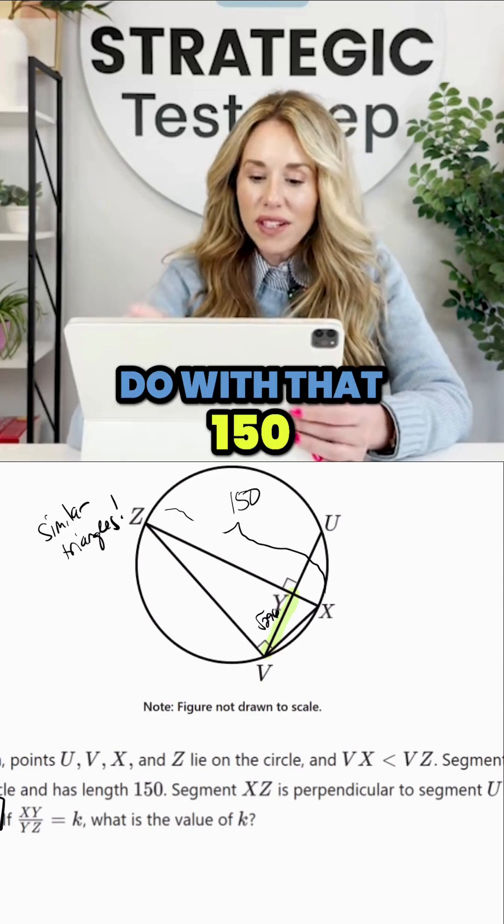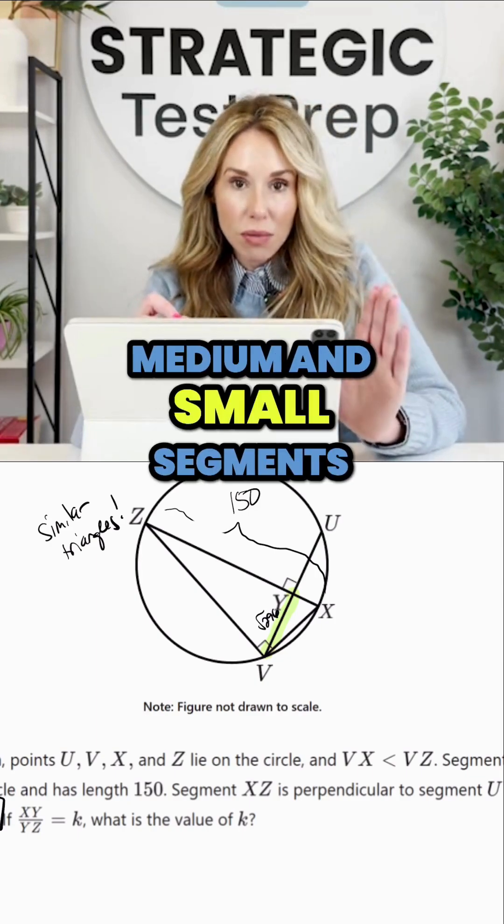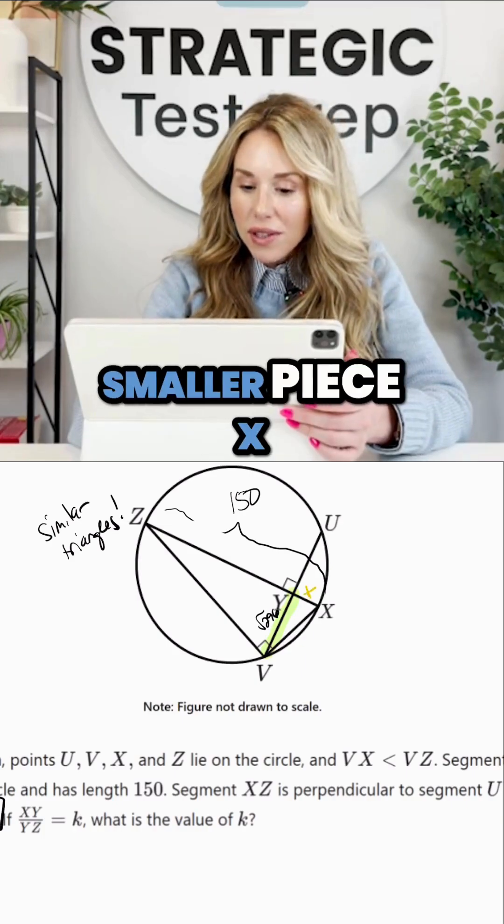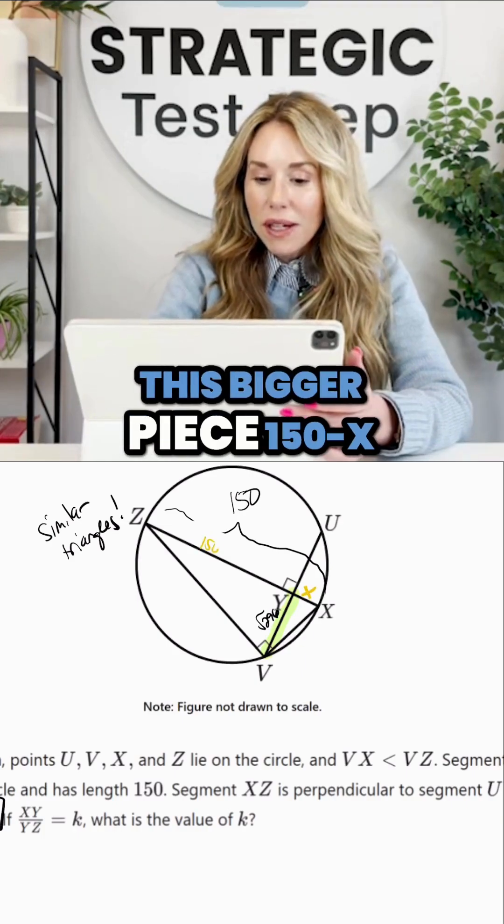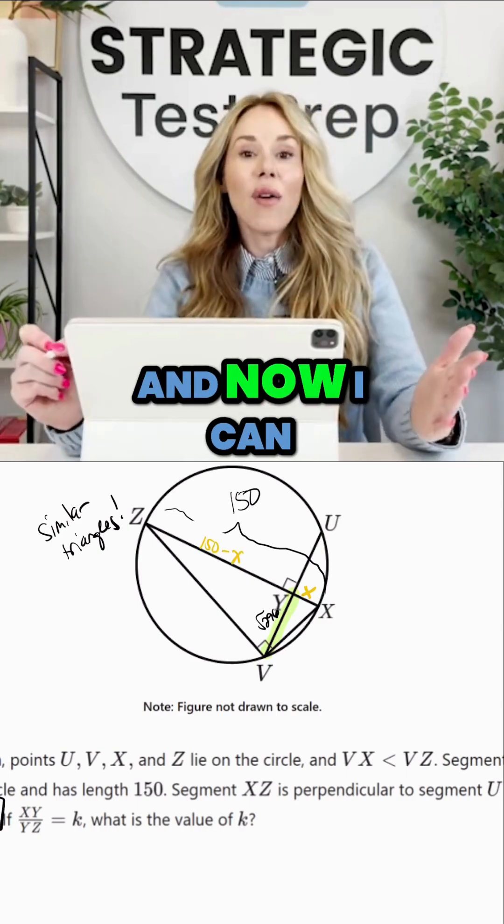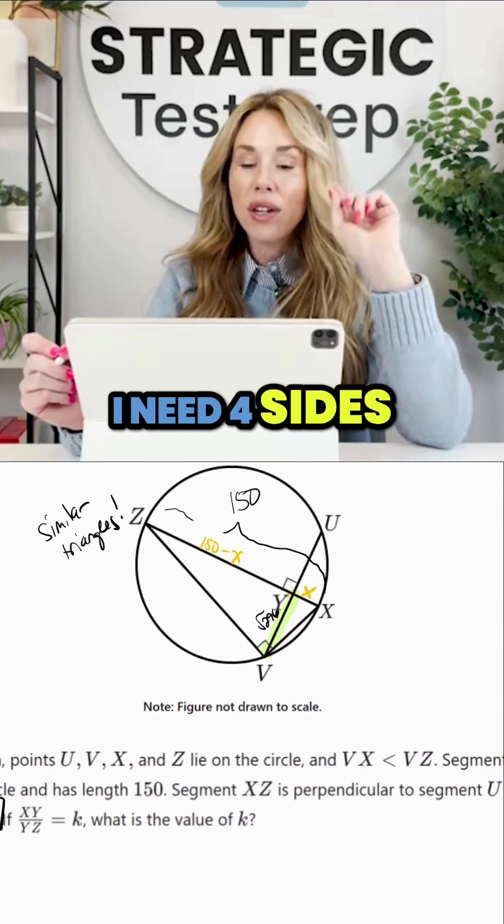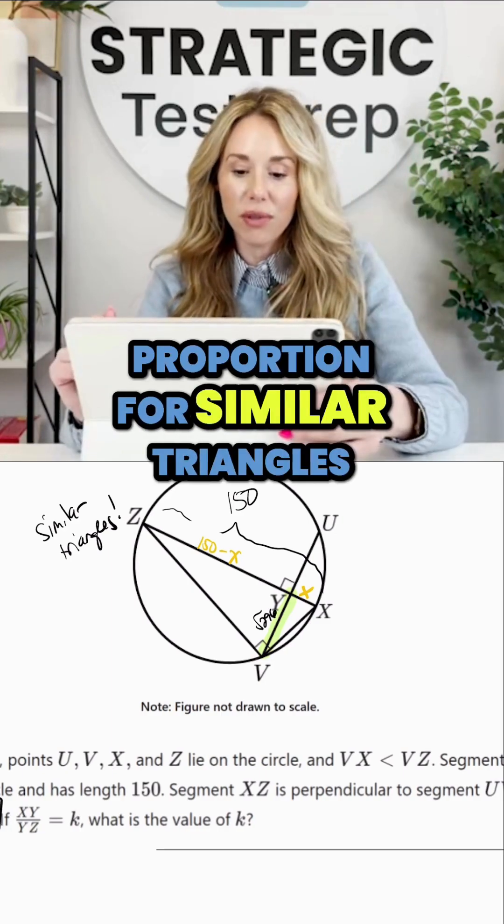So what I'm going to do with that 150 side is I'm going to break it up into medium and small segments instead of one large segment. I want to call this smaller piece X and I'm going to call this bigger piece 150 minus X. And now I can go ahead and set up my proportion. I have four sides. I need four sides, two for each to set up a proportion for similar triangles.